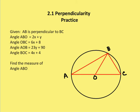In this problem we're given circle O, and we have segment AB which is perpendicular to segment BC. So let's mark up the diagram with this information — AB and BC are perpendicular to each other. Angle ABO is 2x plus y, and angle OBC is 6x plus 8, so angle ABO plus angle OBC equals 90 degrees. We're also given that angle AOB is 23 plus y and angle BOC is 4x plus 4, and the sum of these two angles equals 180 degrees.